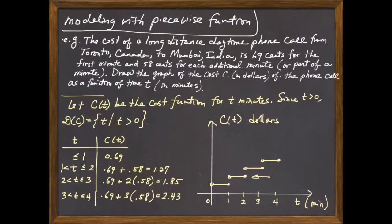I get something that looks like this. For the second piece here, it's an open circle on the left and it's a closed circle on the right. And the value is at 1.27. For the third piece here, the y value is at 1.85. And the fourth piece, the value is at 2.43. The reason why we don't get a continuous function is because each partial minute gets rounded up to a minute. This is actually called a step function with jump discontinuity.